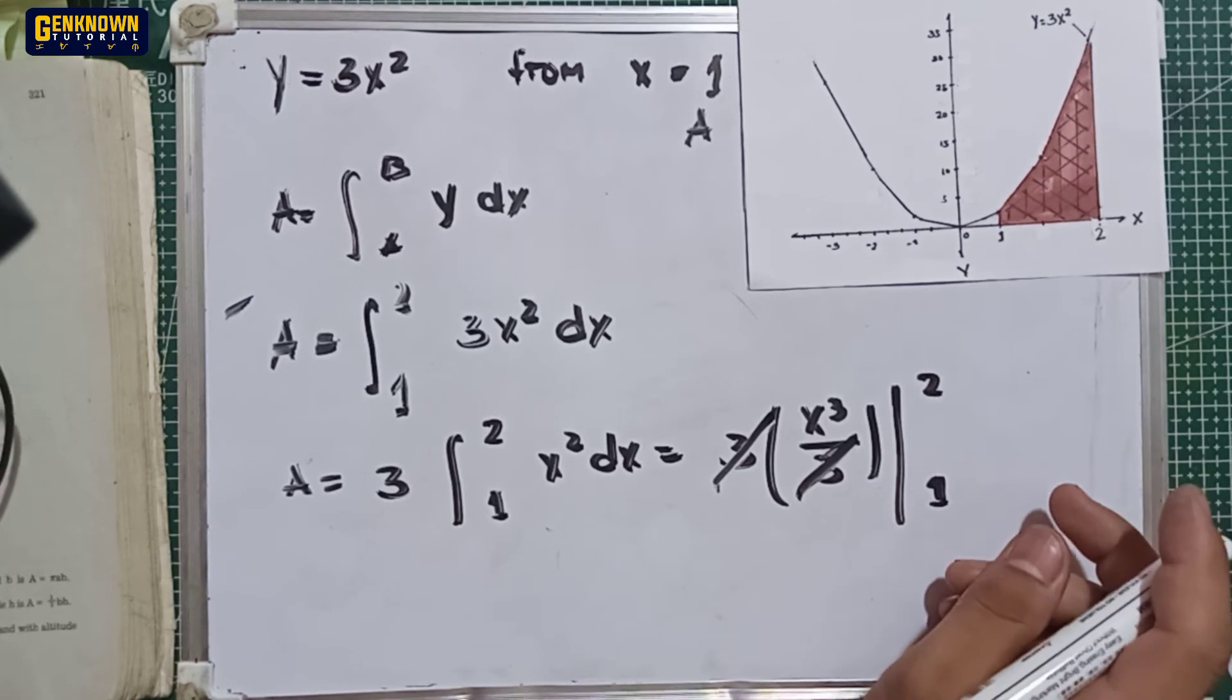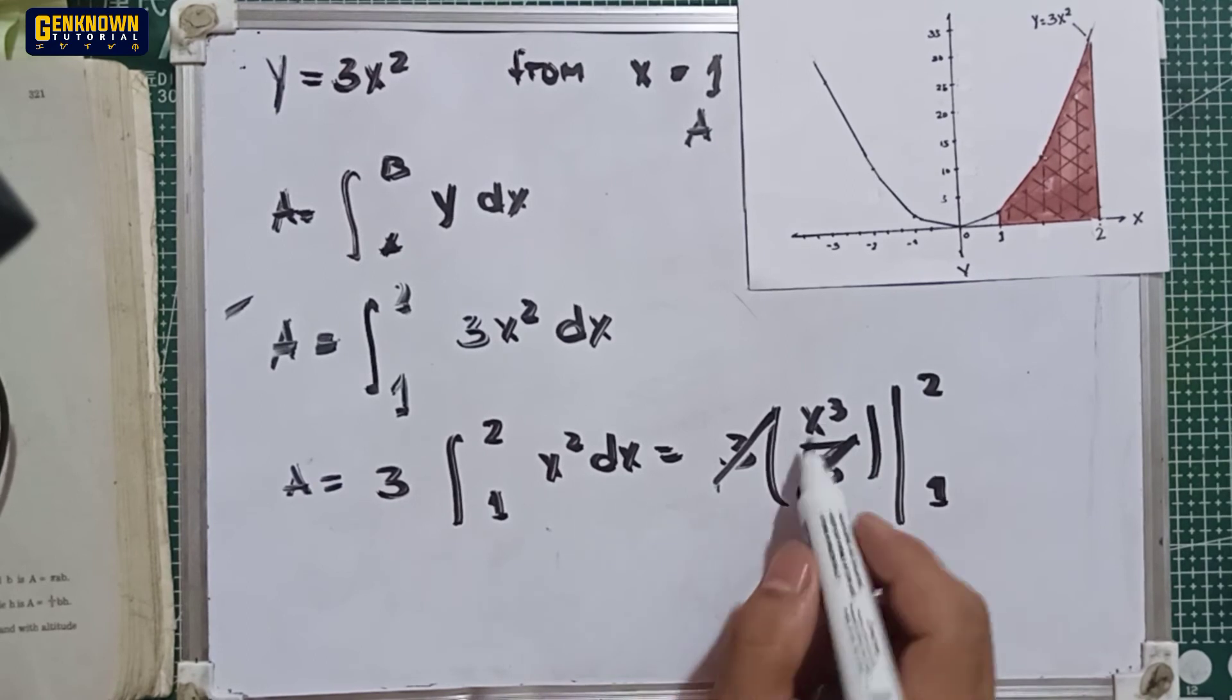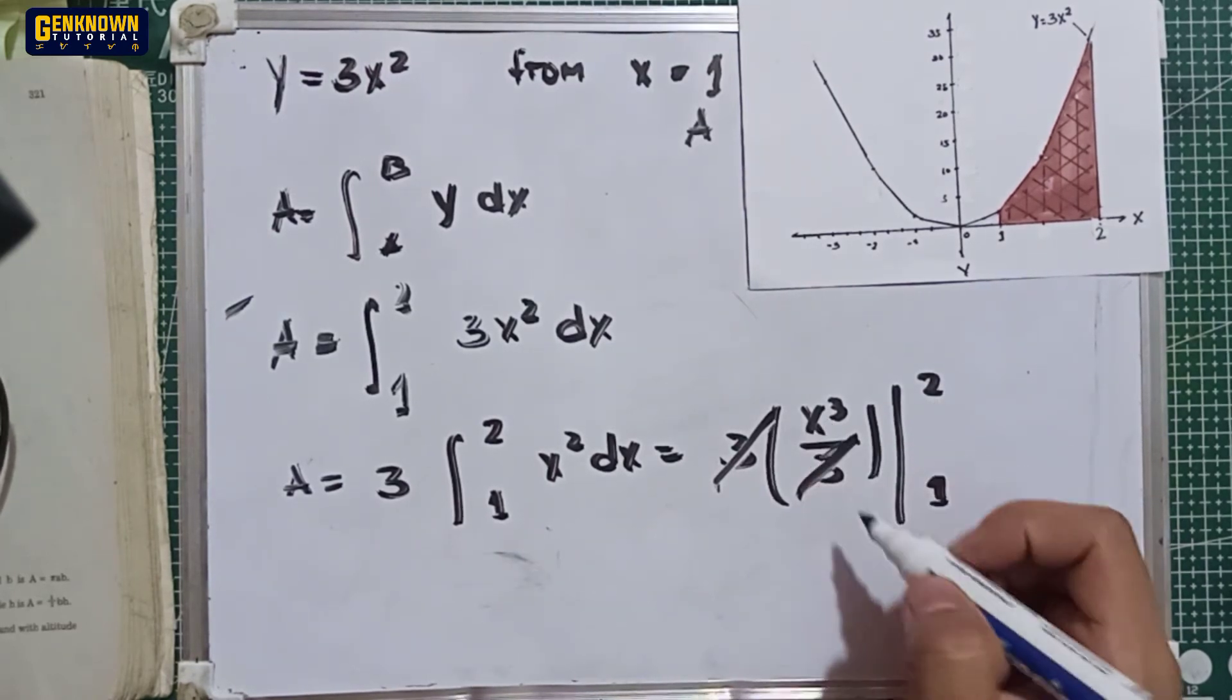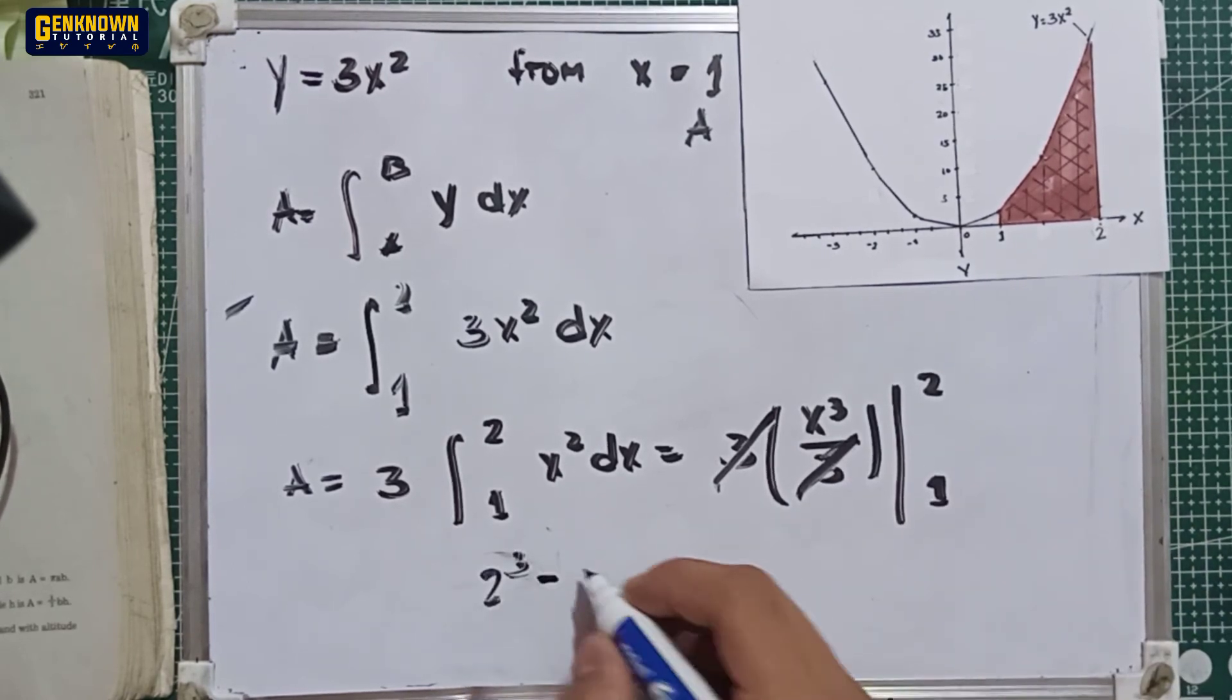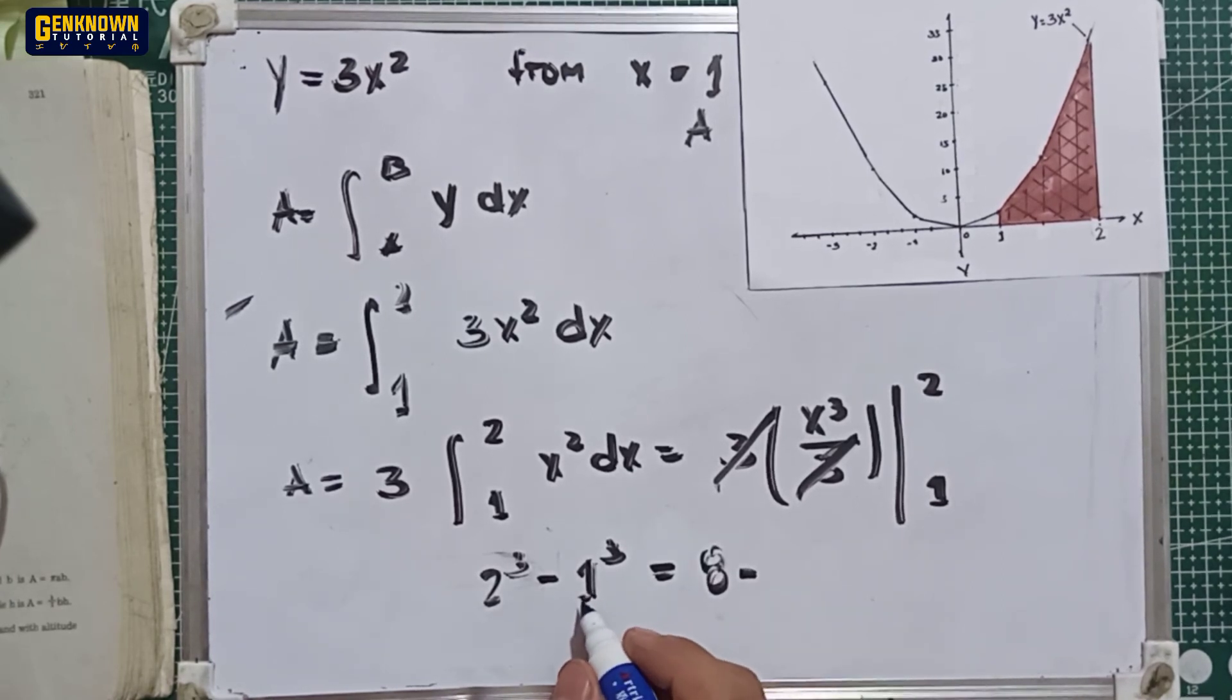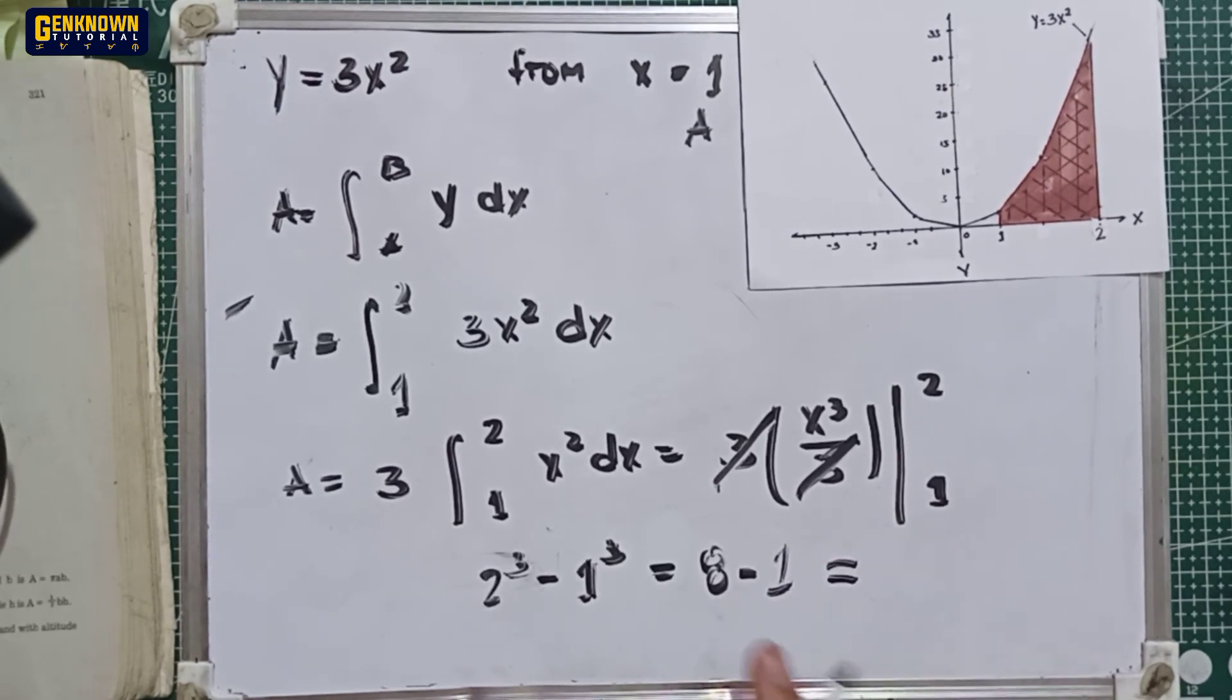Next step is to distribute the limits. The upper limit first: the upper limit is substituted for x minus the lower limit substituted for x. So 2 cubed minus 1 cubed. Remember that 2 cubed is equal to 2 multiplied by 2 multiplied by 2 is 8. So 8 minus 1. 1 to the cube or 1 to the 3 is equal to 1. So the area or the total area is equal to 8 minus 1 is 7. So this is the final answer.